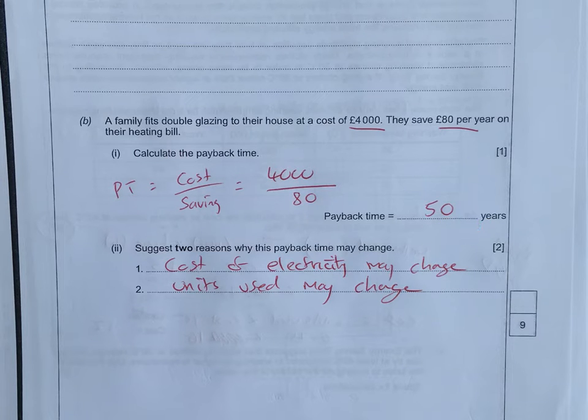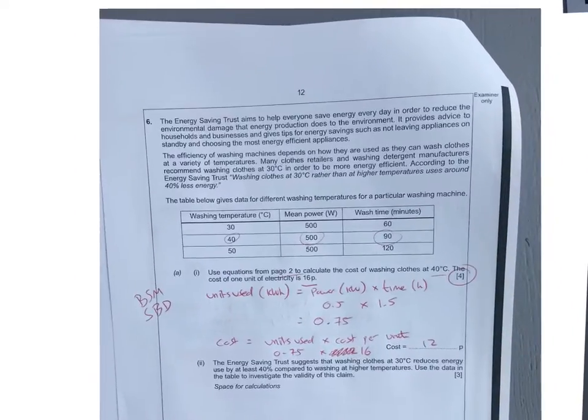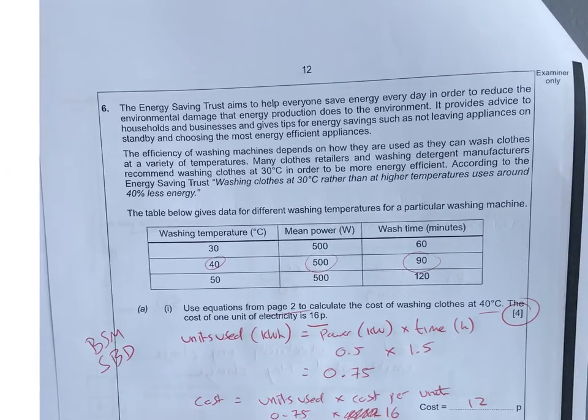Why isn't this always going to be the case? Why might it change? Because the cost of electricity might change and the units that you use, the energy that you use per year might change as well. So two marks, one for each one of those.